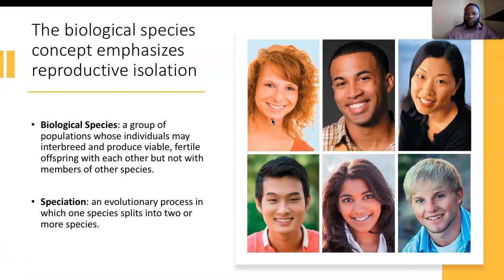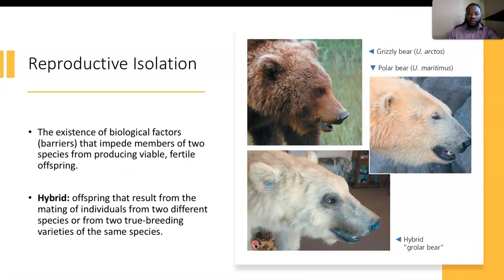With humans, we see that we are all one species. Within humans, speciation happens less likely in the evolutionary process, in which all our genes have a lot of variation. But within reproductive isolation, we can see that speciation has biological barriers that exist that impede members of two species from producing viable fertile offspring.